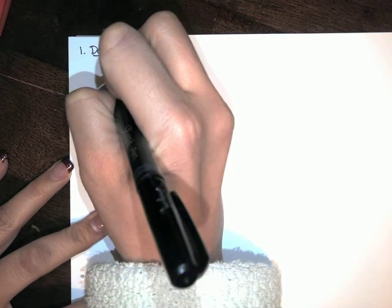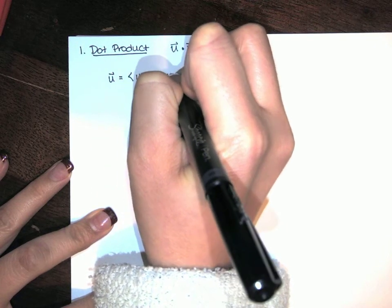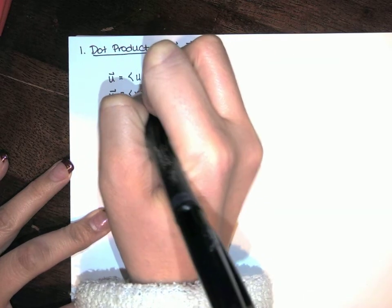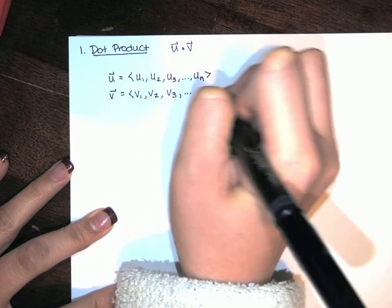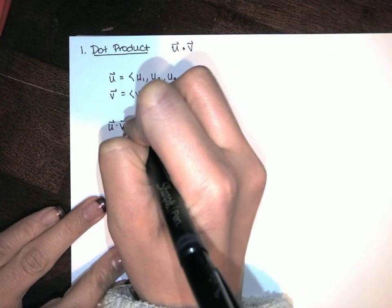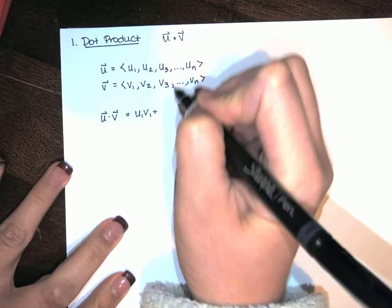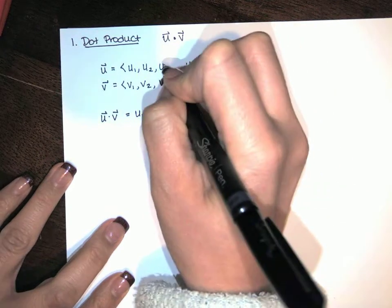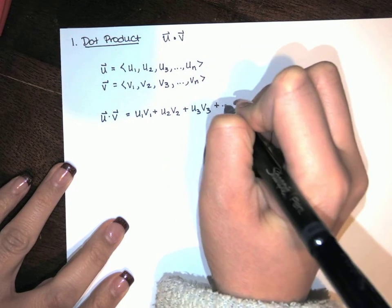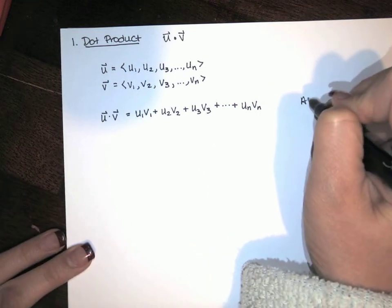In n dimensions, u has components u1, u2, u3, all the way through u sub n, and v has components v1, v2, v3, all the way through v sub n. The dot product of those two is defined by taking the components and multiplying them, then adding, and you keep going until you get to all the components.